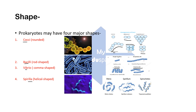The third shape found in prokaryotes is vibrio, or comma shape. These are comma-like cells — Vibrio cholerae is an example of a vibrio cell. The fourth shape is spirula, or helical shape, like in spirula, or spring-like in spirochetes.